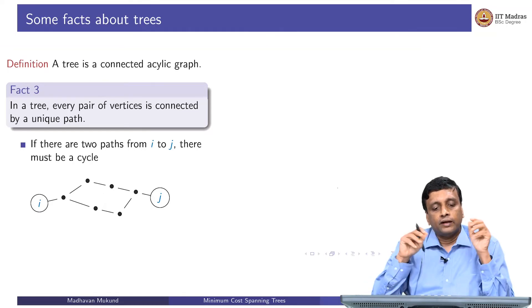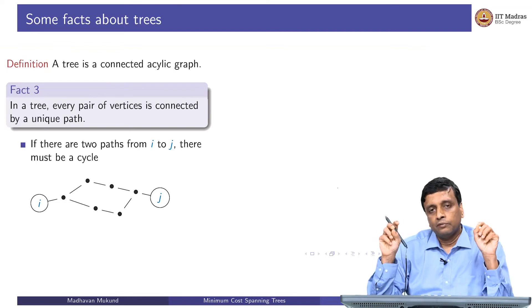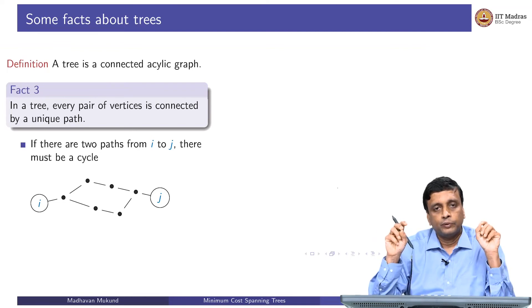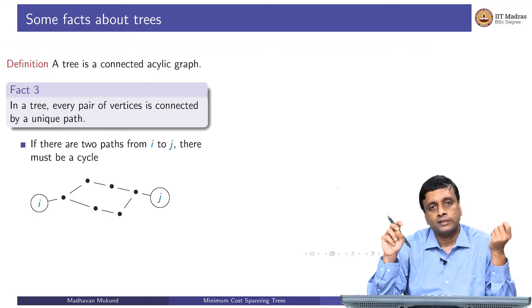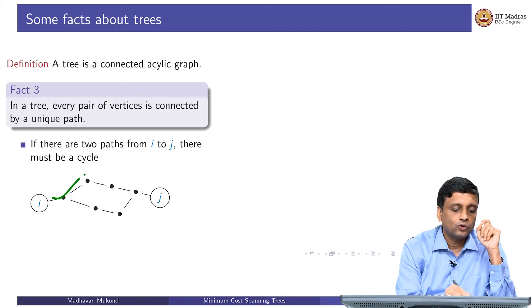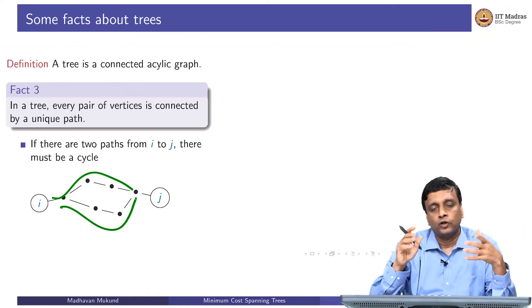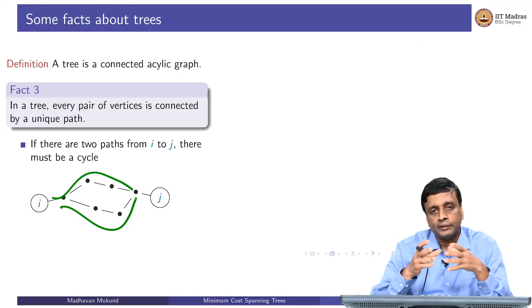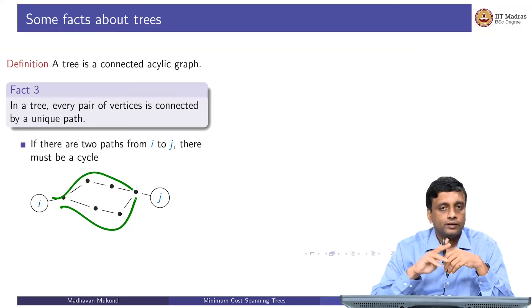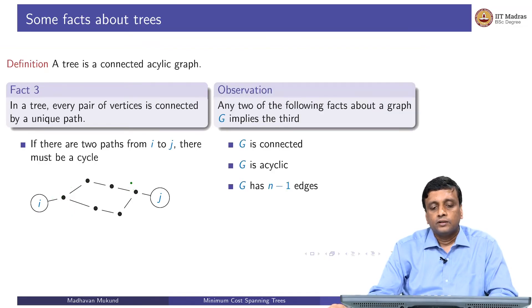The third property is that if I take any two vertices in a tree, then there will be only one path between them. There will be exactly one because they're connected, but there will be only one, because if there were two, then you can see, you can go two different ways. Then there must be some place where these paths diverge and join. So it could be at i and j, or some intermediate point. So there must be a cycle somewhere in the graph. So if you had multiple paths between two vertices, you cannot be having a tree.